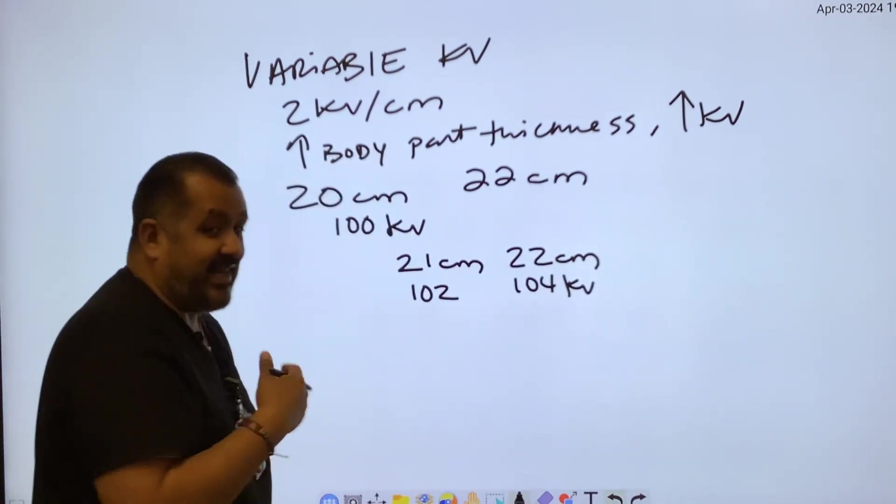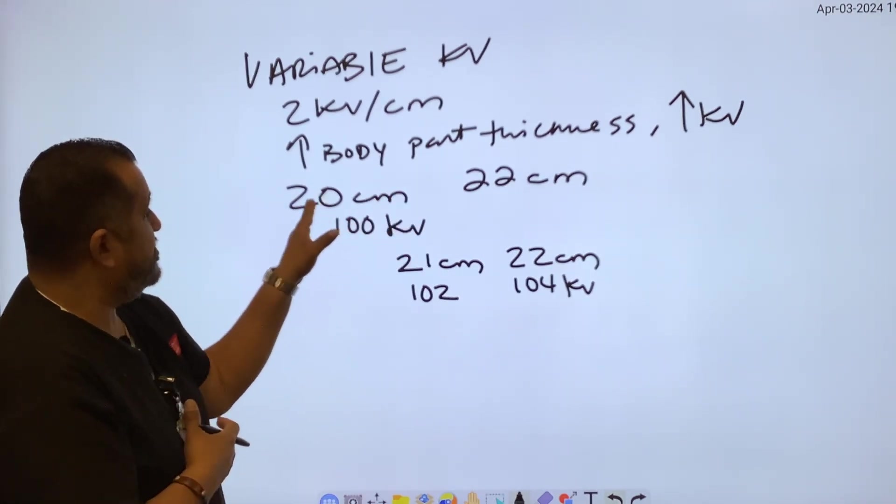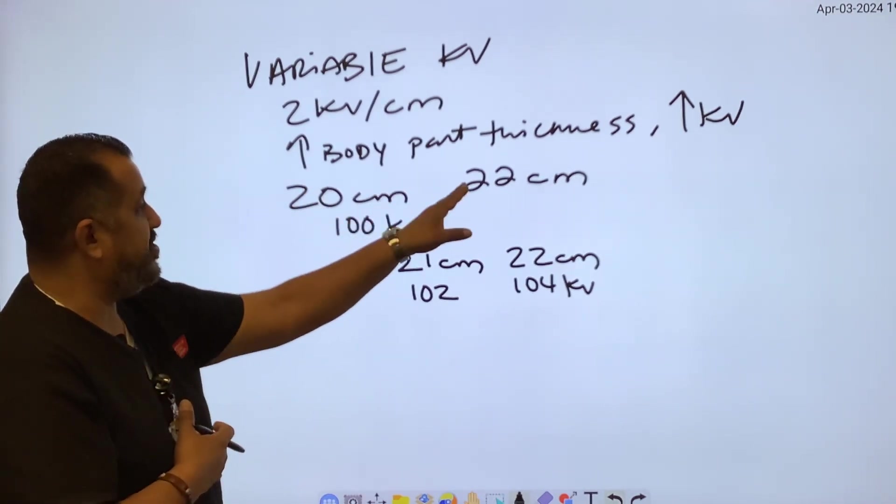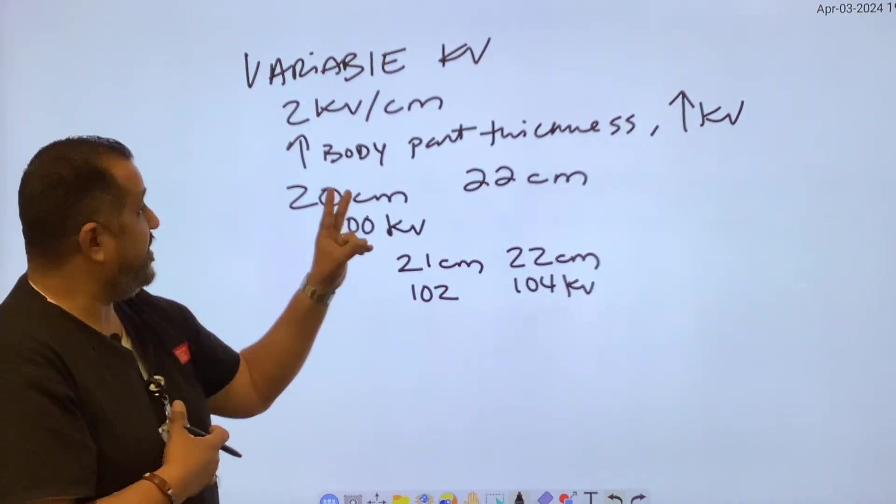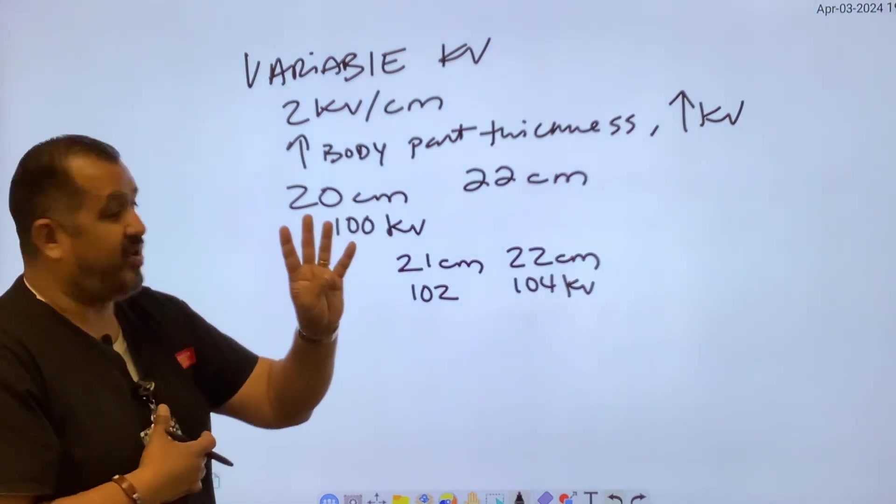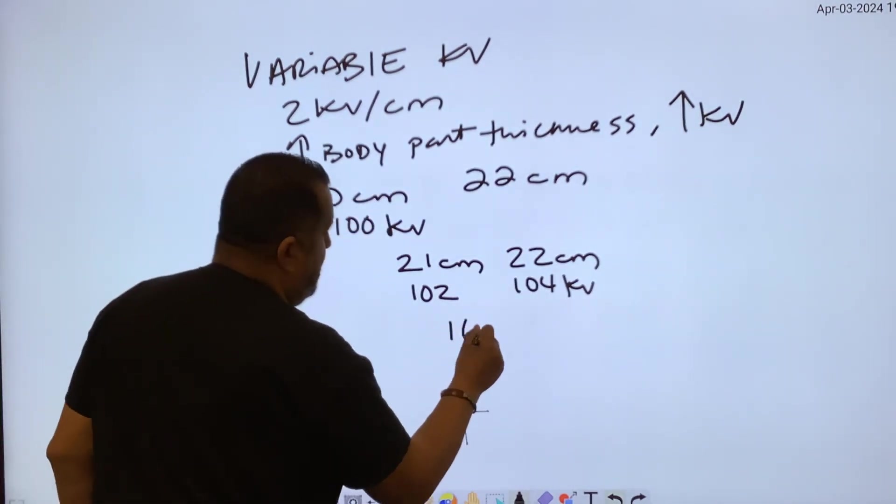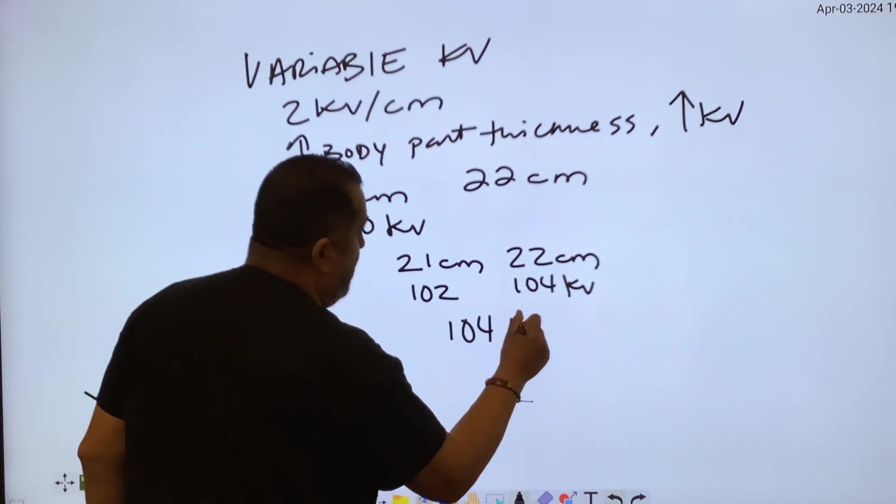There's a quicker and easier way to do this - you can just take the difference. So the difference between 20 centimeters and 22 is two. You'd multiply 2 KV times two centimeters, you get four. So you're adding four KV to 100, and then it'll give you 104 KVP.